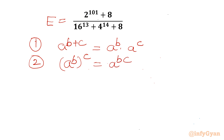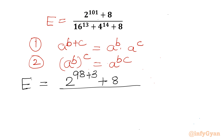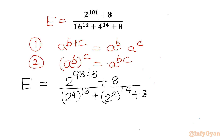Let us apply these to our numerator and denominator. I write E equal to 2 power (98 + 3) plus 8, divided by 16 — which is 2 power 4, whole power 13 — plus 4, which is 2 power 2, whole power 14, plus 8. In the numerator I apply property one, and in the denominator I apply property two.